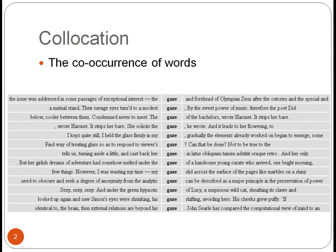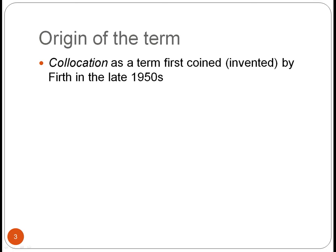So we can see words in the surrounding co-text. For example, here 'gaze' occurs with 'forehead' in the first line and it occurs with 'modest' in line two. In essence, collocation is about this type of co-occurrence.